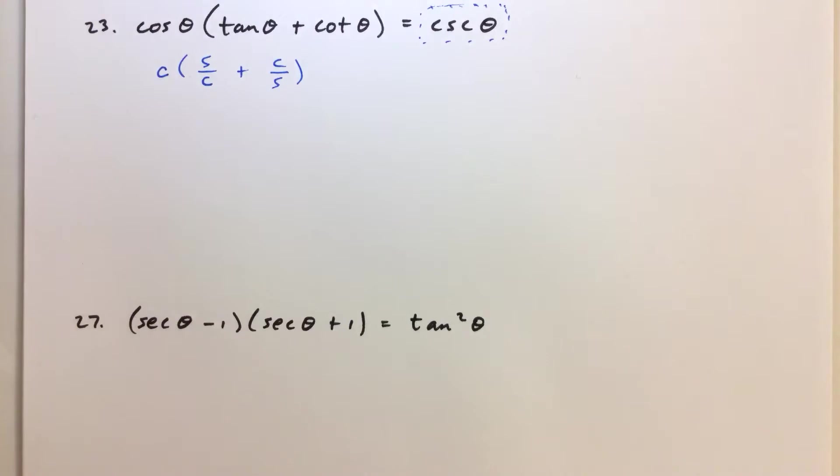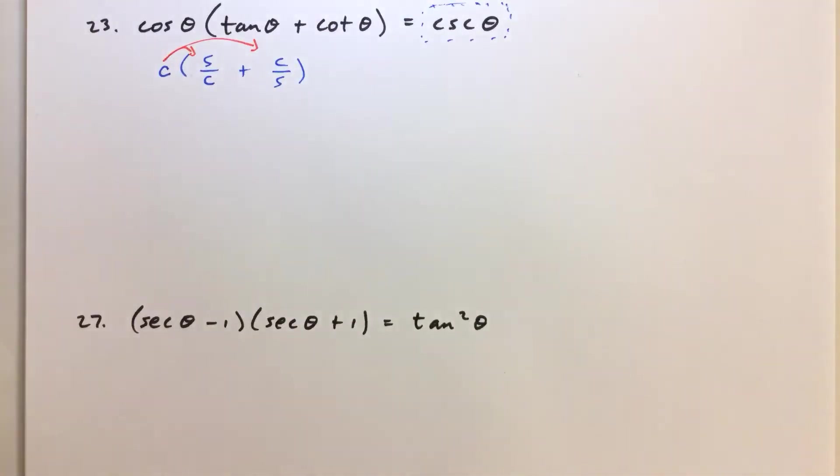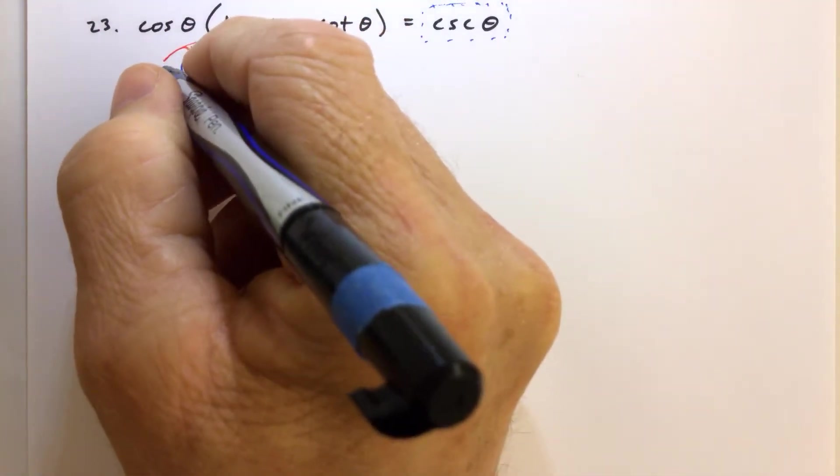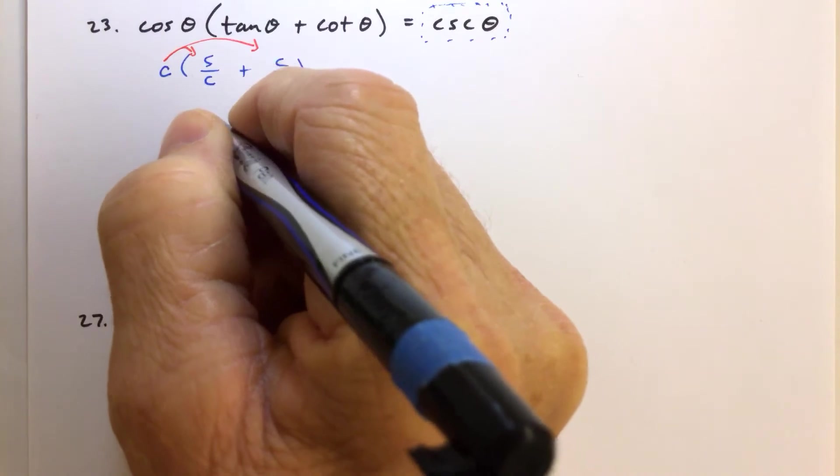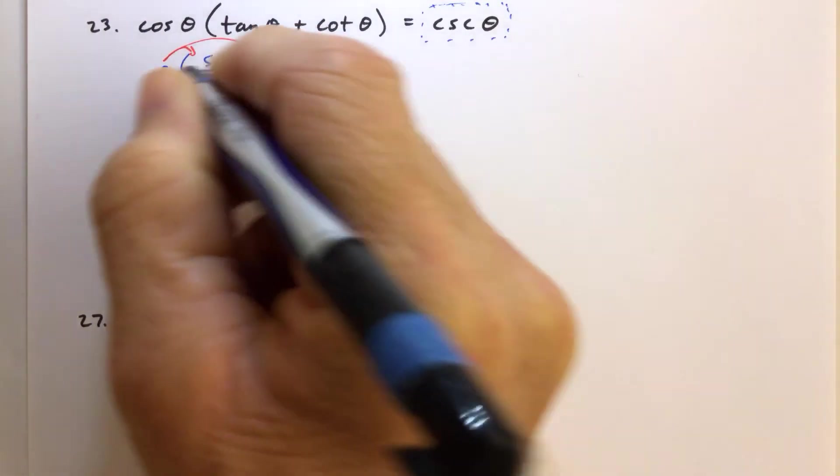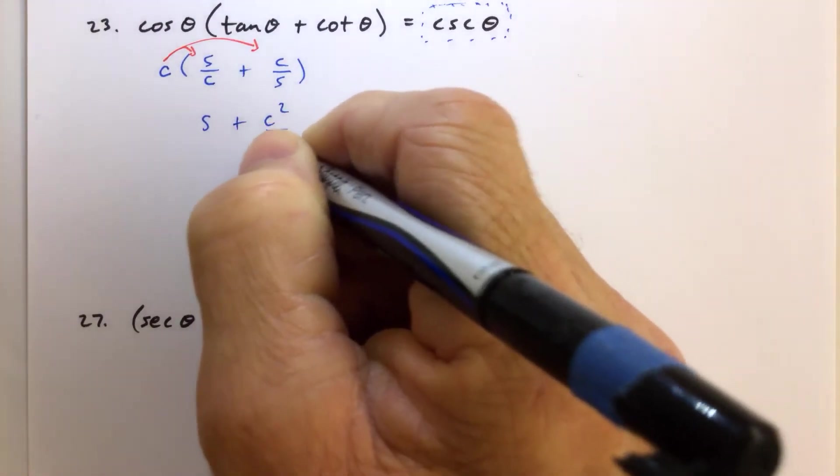Anyway, as we see here, we can just go ahead and distribute this cosine of theta to both terms. Notice that if we multiply cosine of theta times sine over cosine, so C times S over C, that's just S. And then we have C times C over S would be C squared over S.